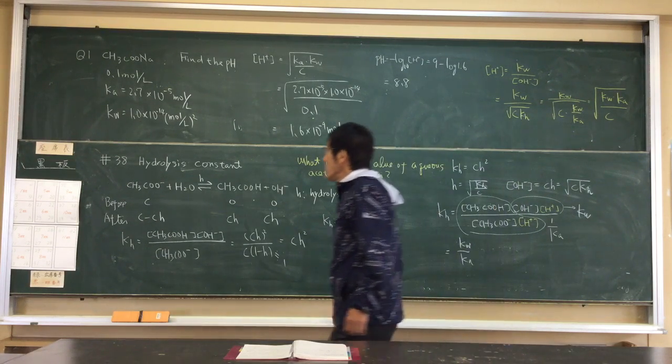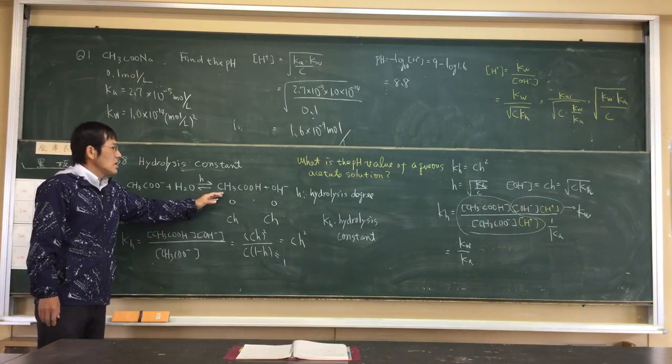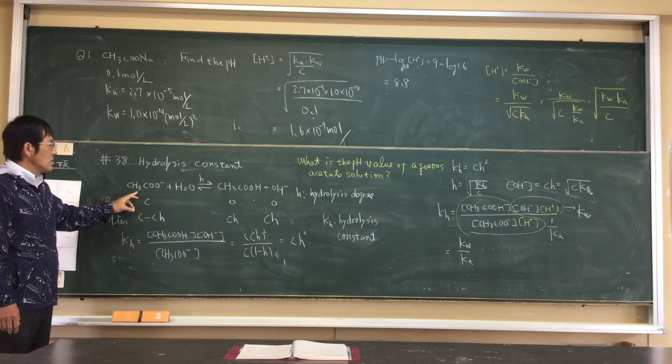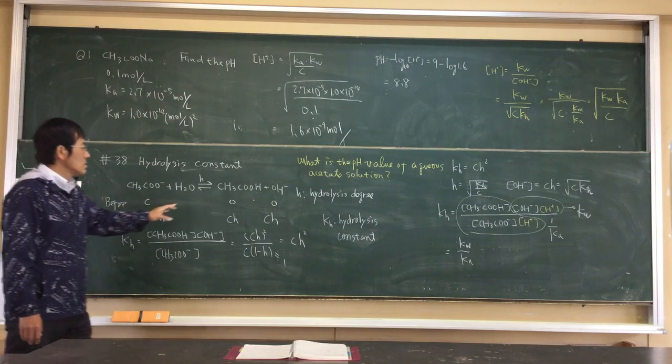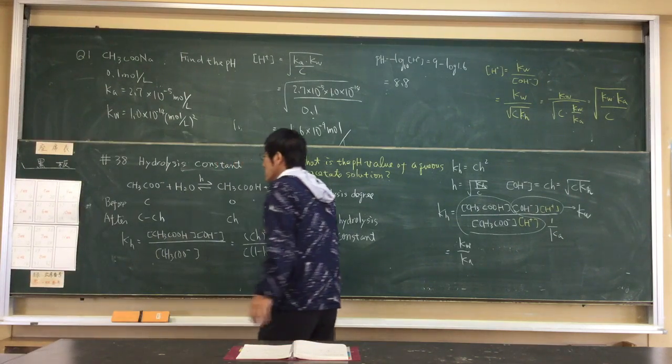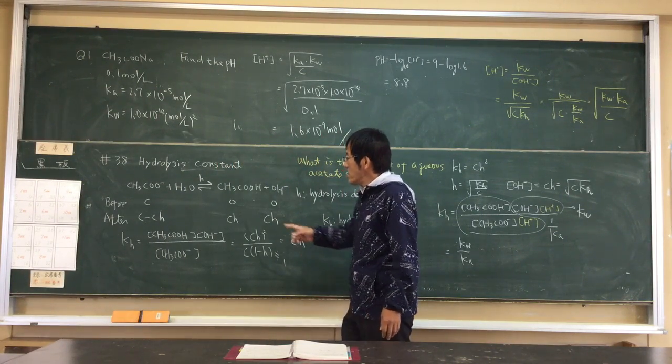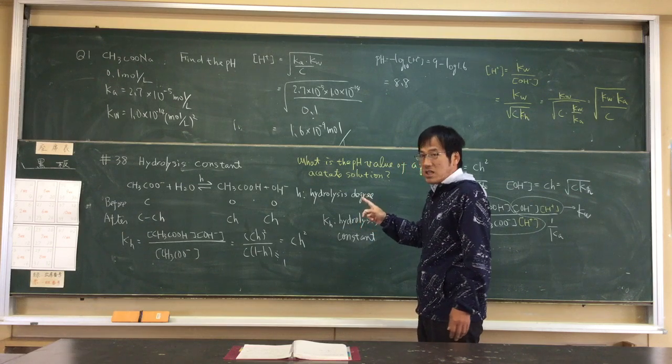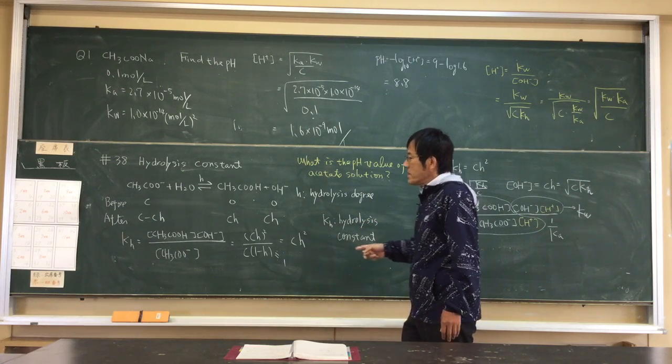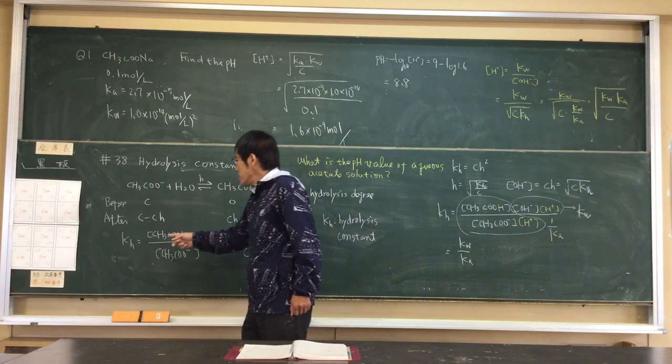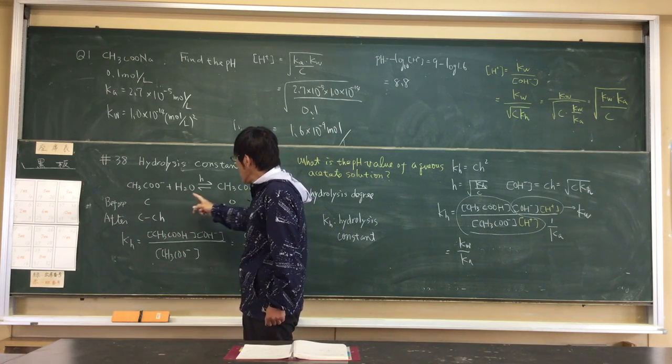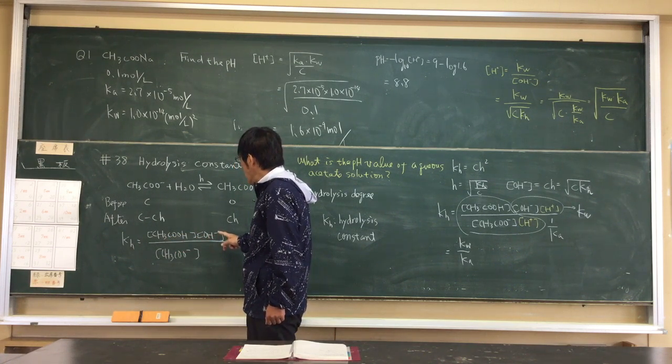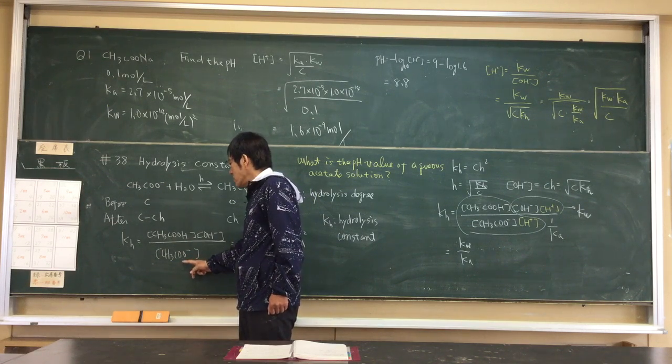Acetate ion hydrolyzes to acetic acid and hydroxide. Initial acetate ion concentration is C molar. After hydrolysis, CH. H indicates hydrolysis. KH is the product of acetic acid concentration and hydroxide ion concentration over acetate ion concentration.